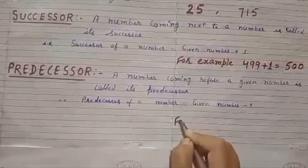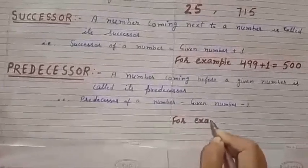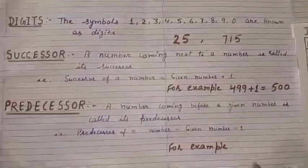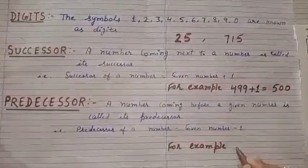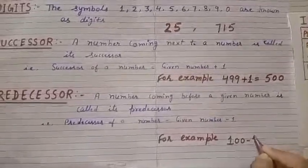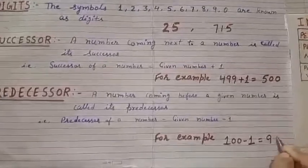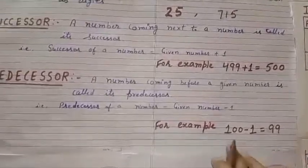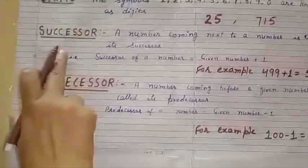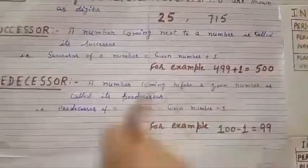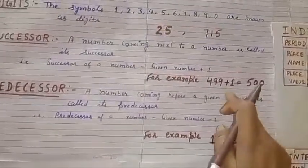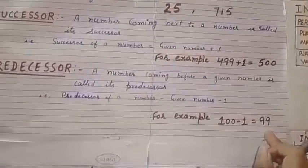For example, take the number one hundred. The predecessor of one hundred is one hundred minus one, that is ninety-nine. So to summarize: successor means given number plus one, and predecessor means given number minus one.